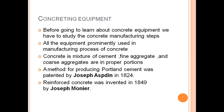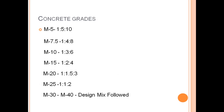There are different types of concrete grades: M5, M7.5, M10, M15, M20, and M25. Their mix proportions are 1:5:10, 1:4:8, 1:3:6, and 1:2:4. For M20 it is 1:1.5:3, and for M25 it is 1:1:2. Fine aggregates like sand particles are used, and for M30 and M40 a design mix is followed.